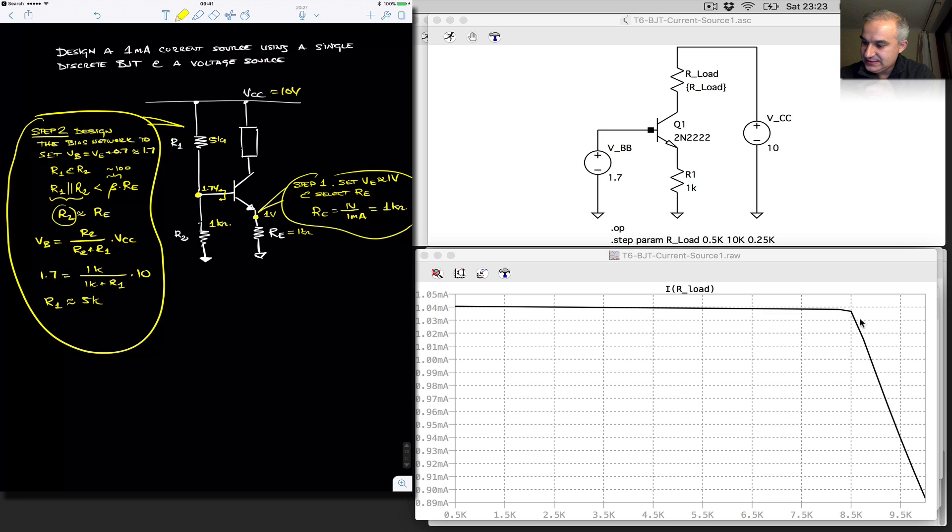So with this, we have 1.7 volts here, 1 volt, this is going to give us the 1 milli at the emitter, and therefore we are going to get a 1 milliamp for our I load. Now, we can calculate the voltage at the collector for any load resistance. It's going to be VCC minus the drop, which is IL times RL.